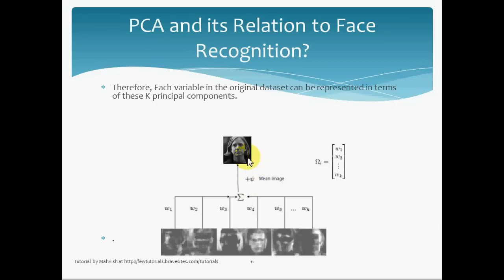In one way, I could say that each image is contributing some features to the training set data. Conversely, I could also say that this image contains a little bit of this feature, a little bit of this feature, a little bit of all the k eigenvectors. So what I'm saying is that this face is made up of all of the eigenfaces in proportions.